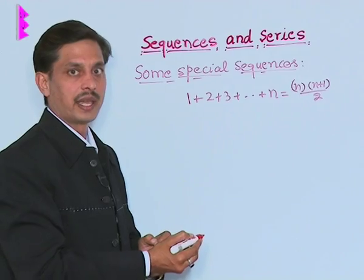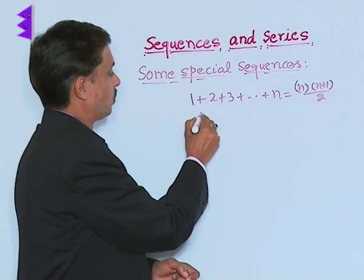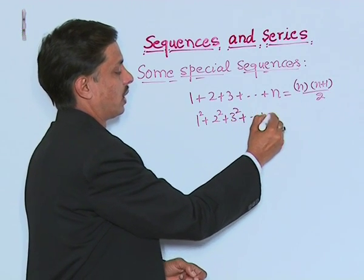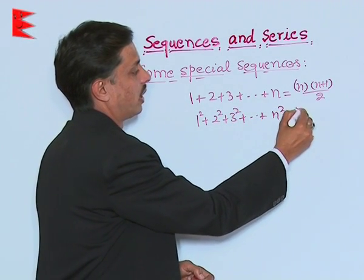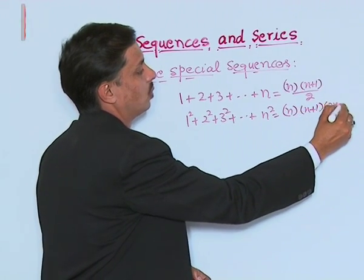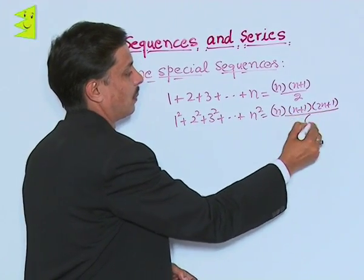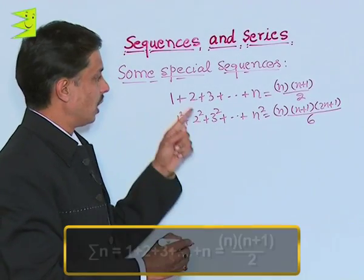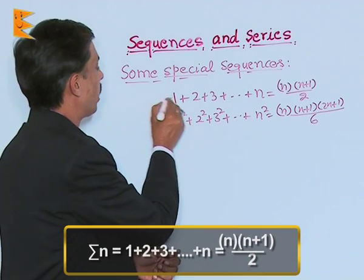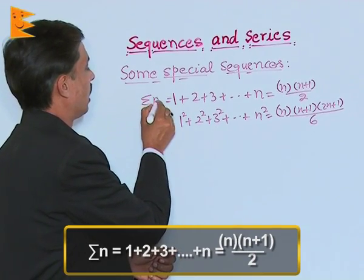The second is 1 square plus 2 square plus 3 square plus n square, which is n into n plus 1 into 2n plus 1 upon 6. This first result, in short, is known as sigma n. The second result is known as sigma n square.